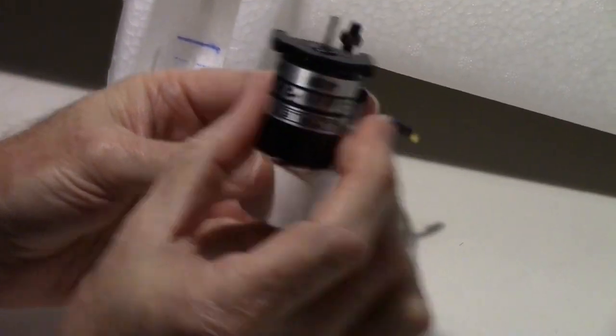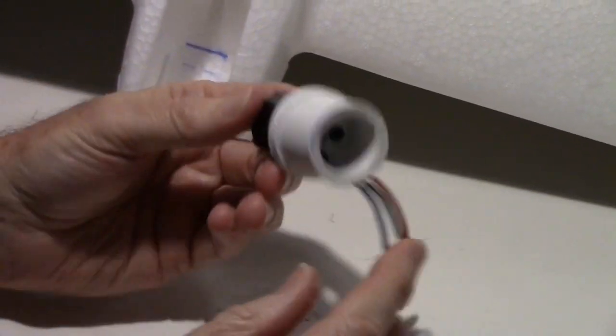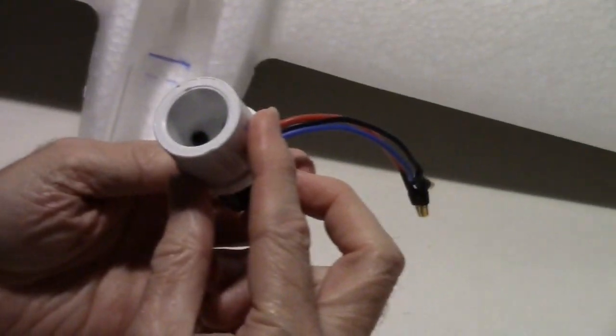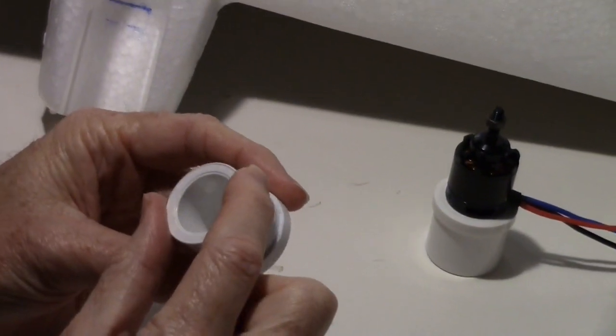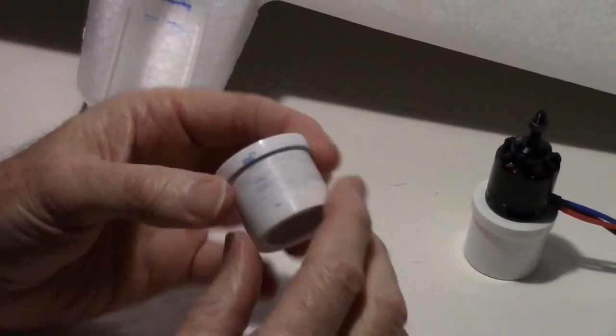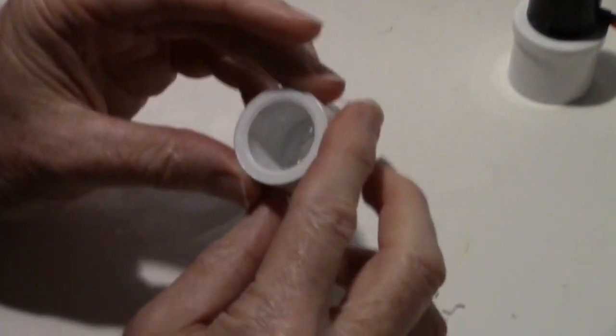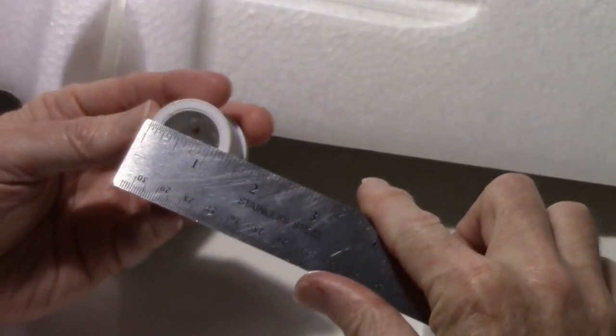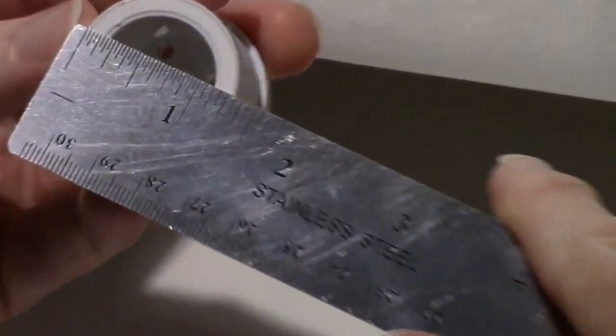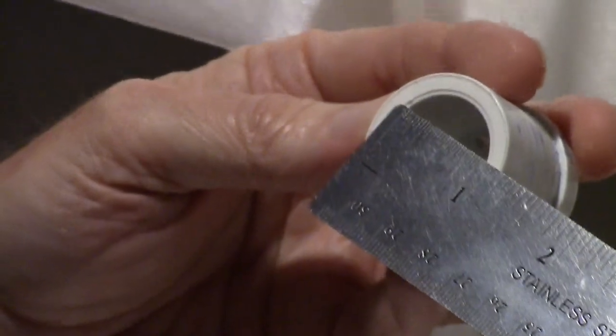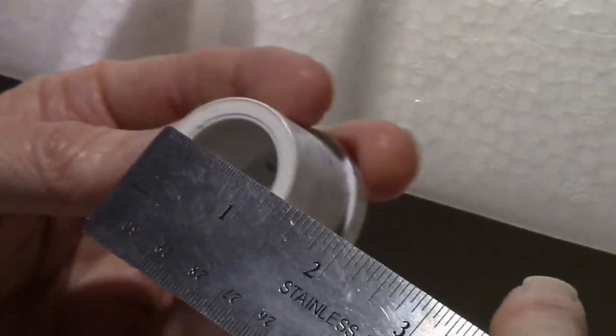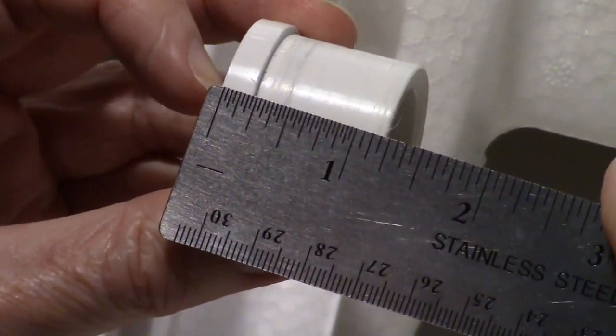They're about the same diameter. I've got this fitting I'm using for a motor mount. It's actually an inch and a quarter PVC plug. If you go in here and measure, you can see it's inch and a quarter outside diameter, inch and a quarter long too.